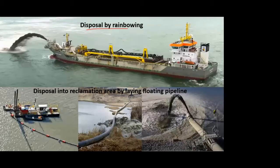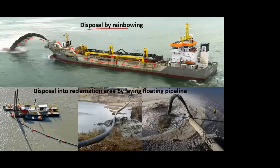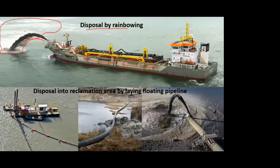The first disposal method is called rainbowing. As seen in the topmost figure, the same vessel now has another pump or white-color pipe attached to it. Whatever material was stored in the bins is now pumped outside and thrown in the shape of a rainbow — that's why this action is called rainbowing. Here they are disposing the dredge material into the water to create a reclaimed area or an artificial island, similar to what was shown for the Palm Islands of Dubai.